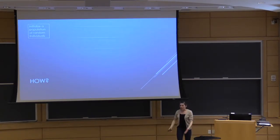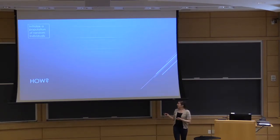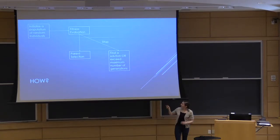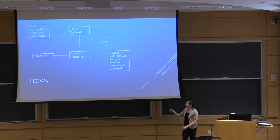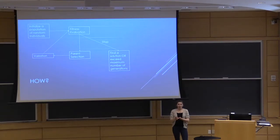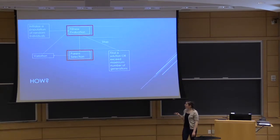So how does genetic programming actually work? First we initialize — we make a bunch of random programs — and then we determine how good they are, how fit they are. From there we select parents that are pretty fit, and then we change them a little bit so we're not just continuing the same copies of the same program over time. We edit them and create a new population, or if we find a program that does what we want, we stop. We also have a max number of generations so we don't run forever.